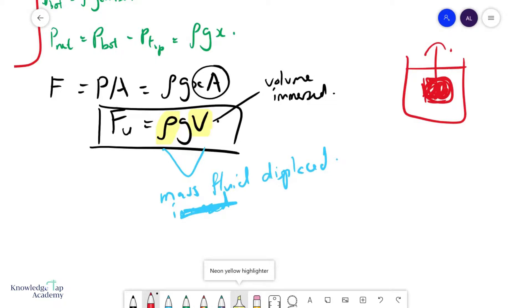And so if you take that volume and you multiply it by the density of the fluid, that is the mass of fluid displaced. And so if I include the G now, it will become the weight of the fluid displaced. And then this now becomes what we call Archimedes' principle, which says that the upthrust on an object is equal to the weight of fluid displaced.